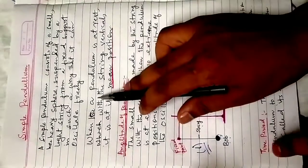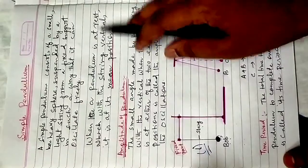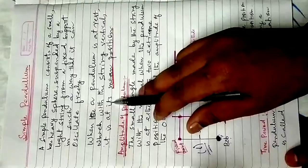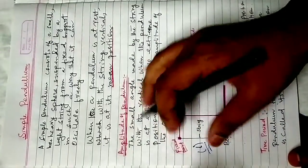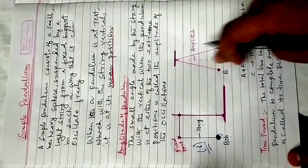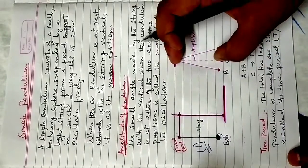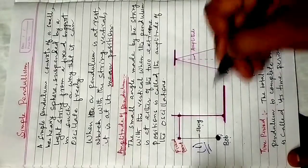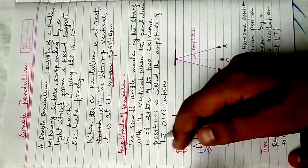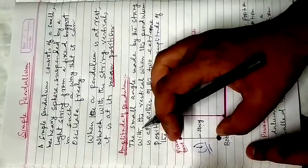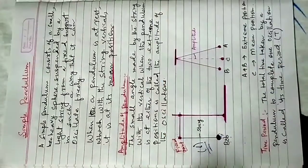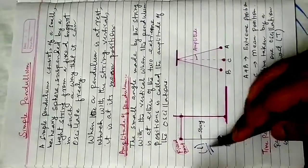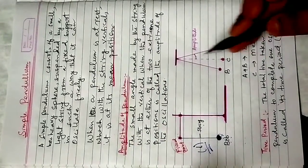When a pendulum is at rest with the string vertical, it is at its mean position. That vertical line is the mean position. The point C — this line C is the mean position. The length of the string is denoted as L, and C is the mean position.